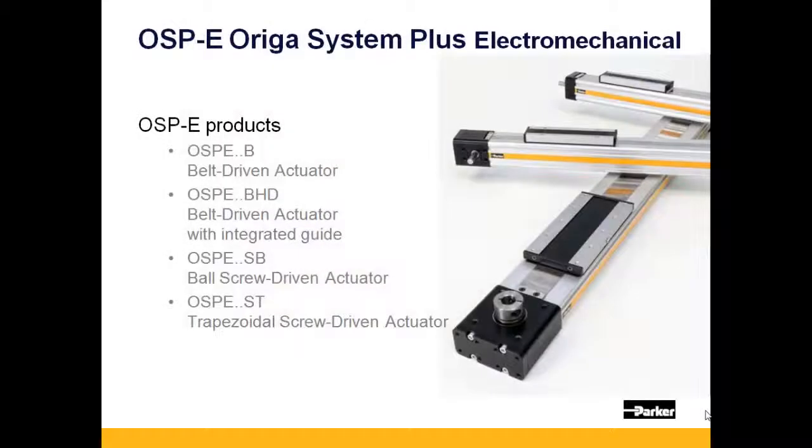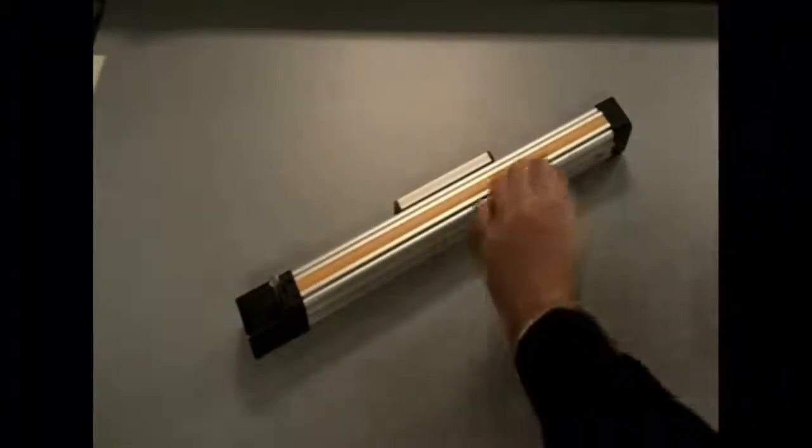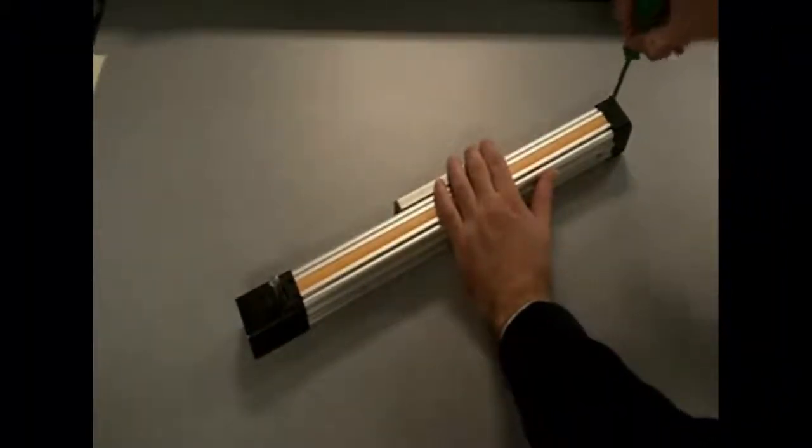The mounting procedure outlined in today's presentation can be applied to any of the products within the OSPE family. Your OSPE actuator will come with a pre-installed piece of yellow plastic banding that covers the entire length of the actuator.